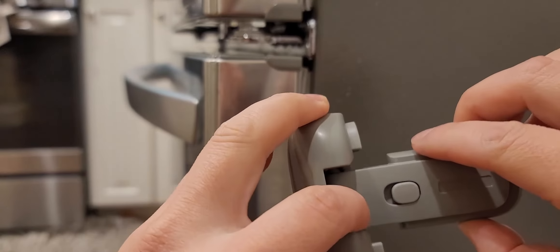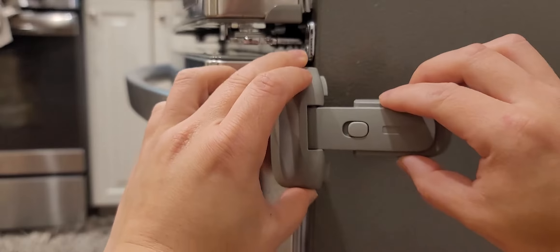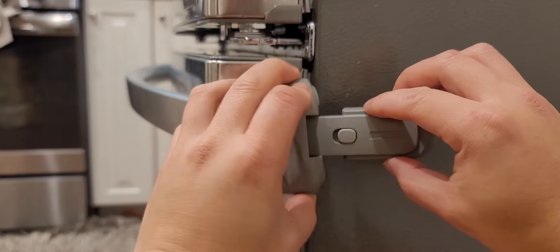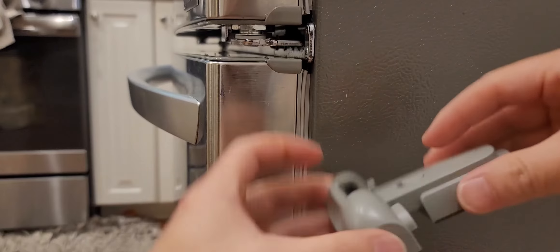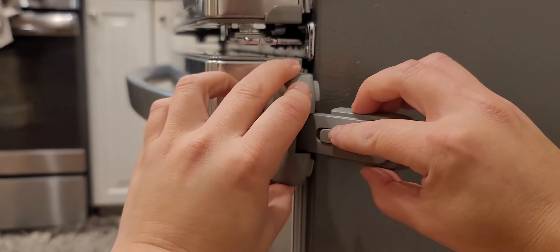So what you want to do first is make sure you know where you're going to put it. There is a lip right here that you're supposed to align towards the edge of the refrigerator door.